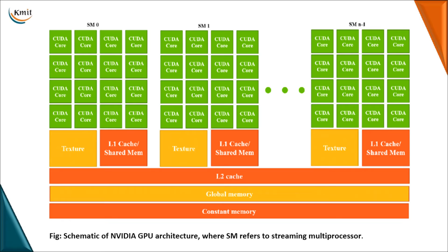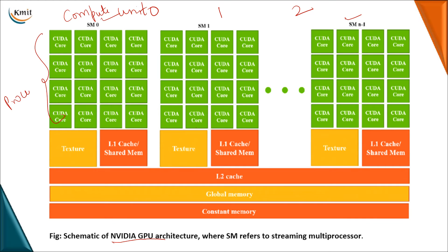This is an example of the Nvidia GPU architecture — Nvidia being one manufacturer of GPUs. The architecture has streaming multiprocessors (SM), also called compute units. Each compute unit internally has multiple processing elements, called CUDA cores. Each compute unit has its own memory, and all compute units share three types of memory: cache memory, global memory, and constant memory.